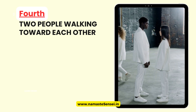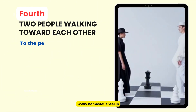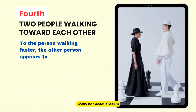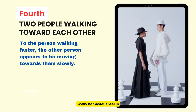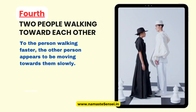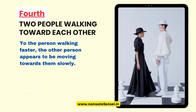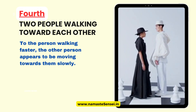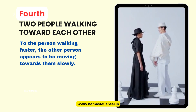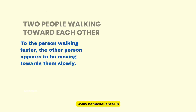Fourth, two people walking towards each other. When two people walk towards each other at different speeds, it is an example of relative motion. Imagine one person is walking towards the other person at a faster speed. To the person walking faster, the other person appears to be moving towards them slowly. However, to the person walking slower, the person walking faster appears to be moving towards them quickly. This difference in perception of the motion is due to the relative speeds of the two people.